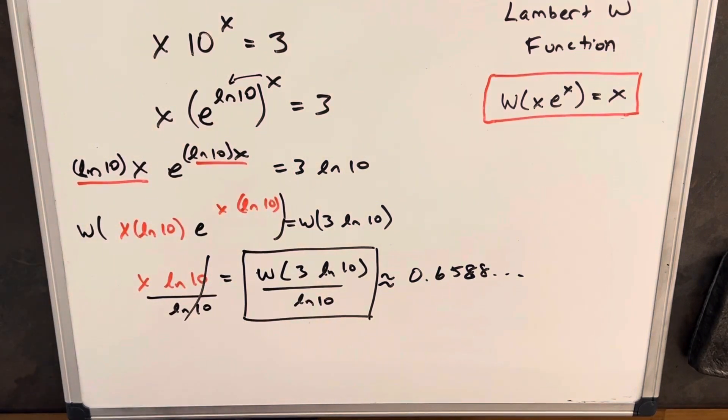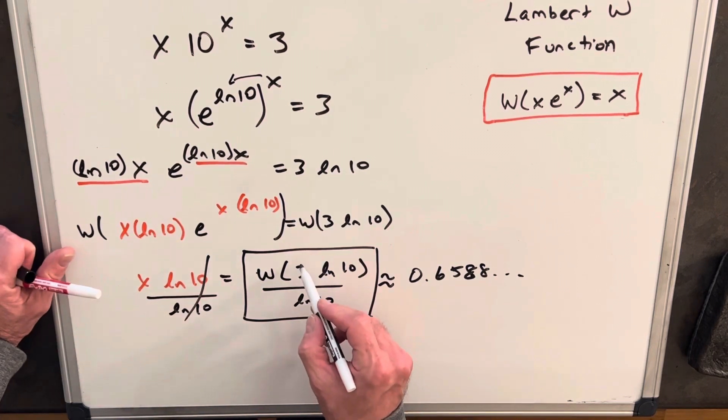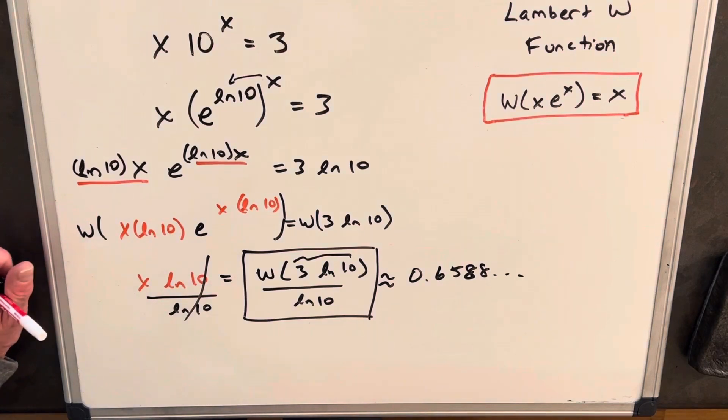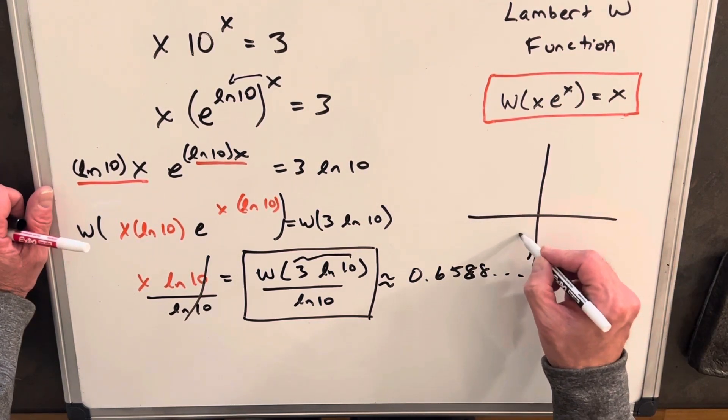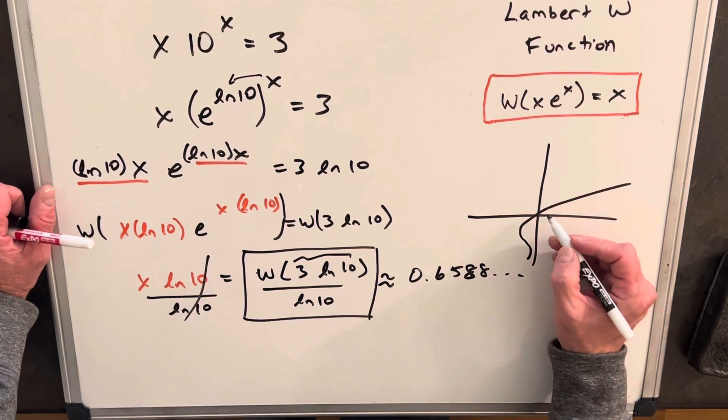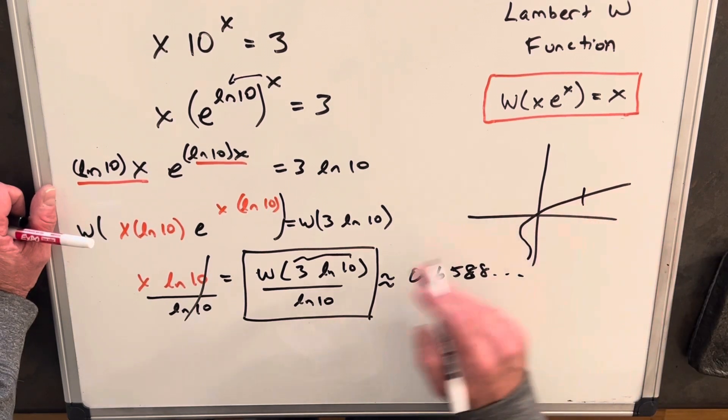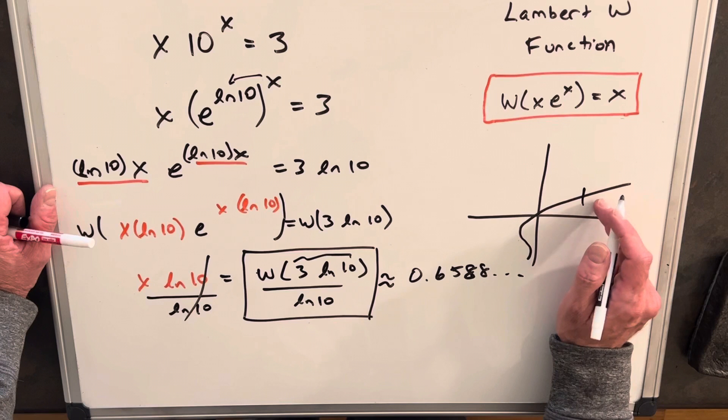Now how do we know there isn't another real solution lurking somewhere? Well, the thing is, the input of the Lambert W here is a positive number. Our Lambert W function real sloppy graph is going to be something like this. So all of our positive values of the Lambert W function have just one real solution, real part on this graph.